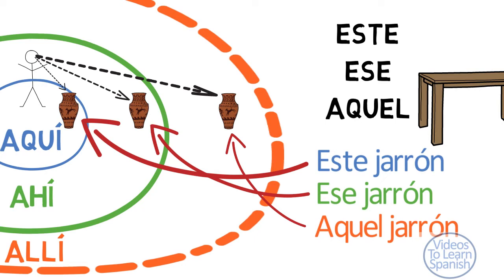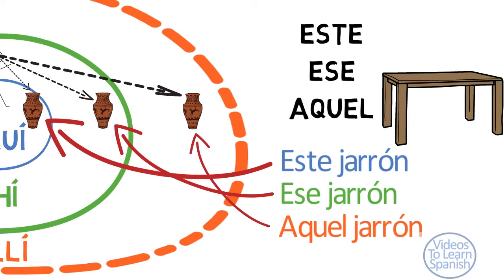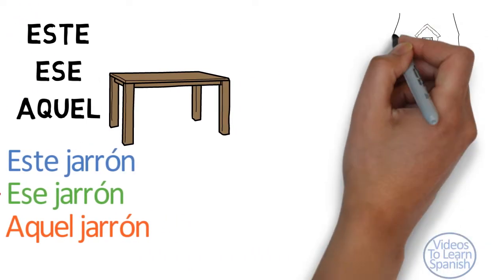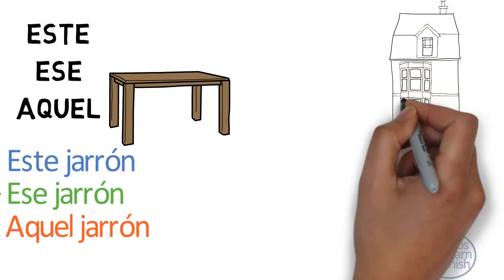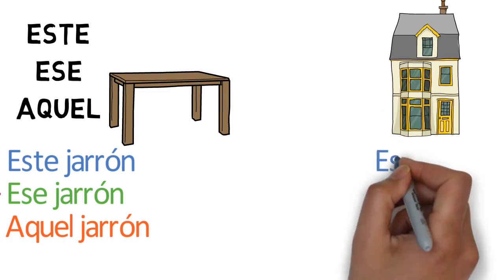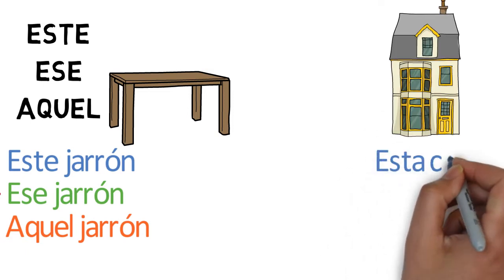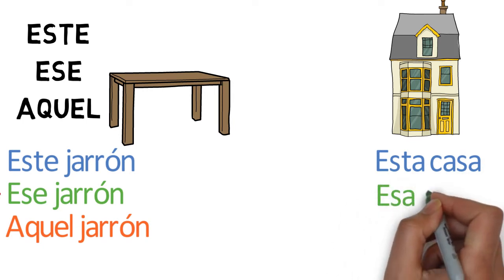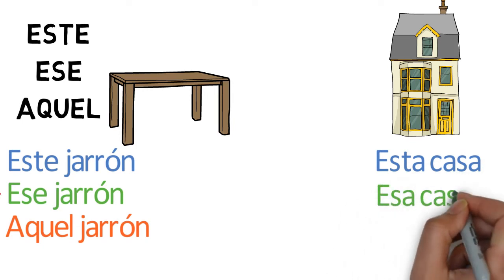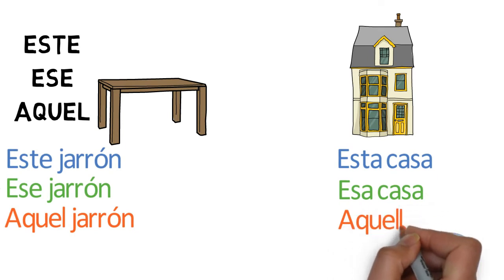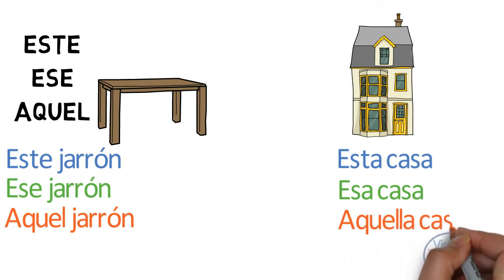Este, ese, and aquel have gender — masculine or feminine — and number — singular or plural. The gender and number of these adjectives must agree with that of the noun they go with. Casa is a feminine noun: esta casa, esa casa, aquella casa.